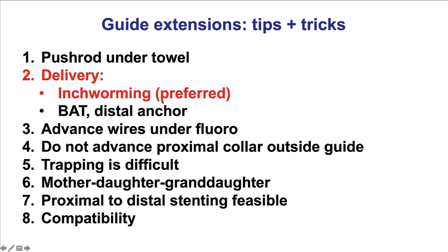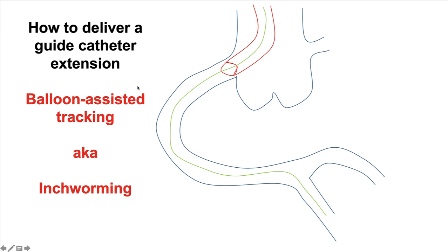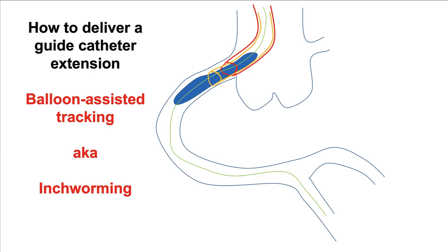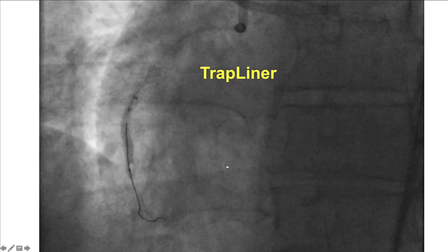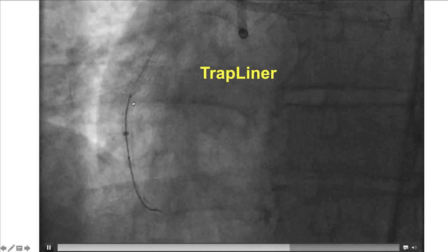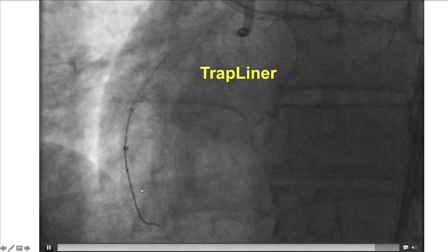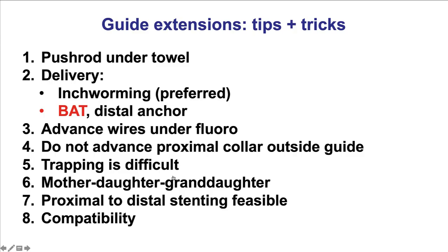In terms of delivery, the preferred technique is called the inch-worming technique, and there is a separate video on this. Briefly, the guide extension is inserted in the proximal part of the vessel. A small balloon, usually 2.0 by 12 or 15, is inserted halfway in and halfway out of the guide extension. It is inflated at low atmosphere, deflated, and while it's being deflated, the guide extension is advanced, slowly coming all the way down to the desired location. Balloon is inflated, deflated, and when deflated the guide extension is advanced, helping it reach the desired location.